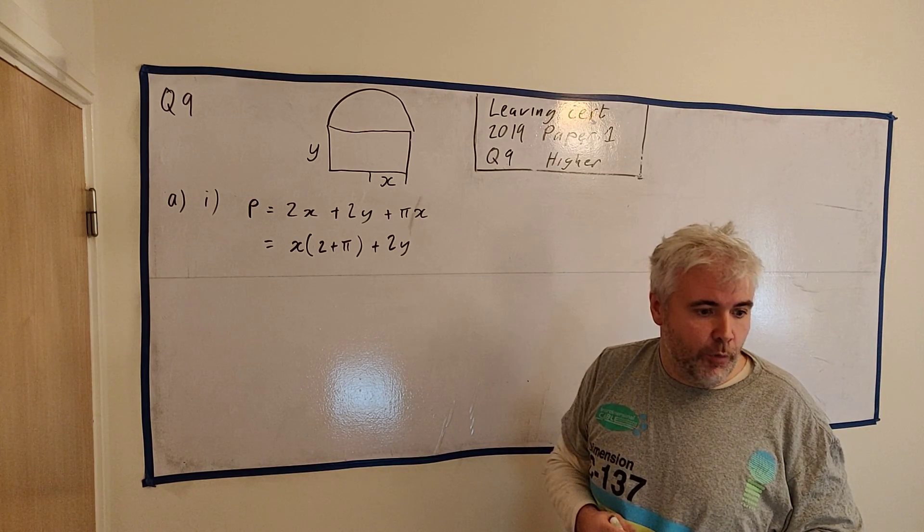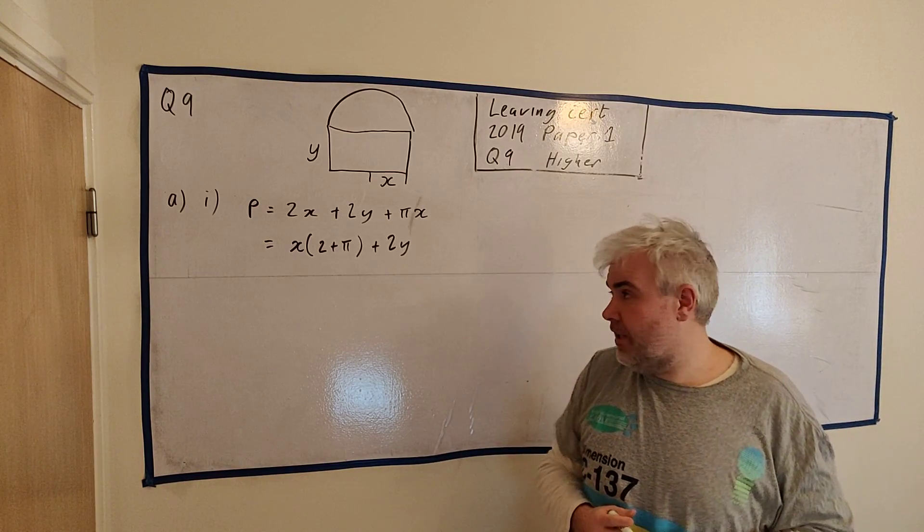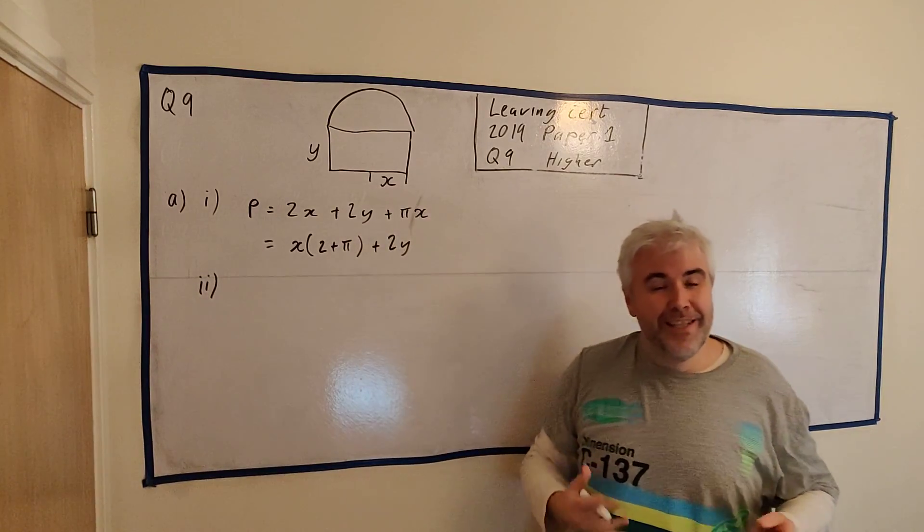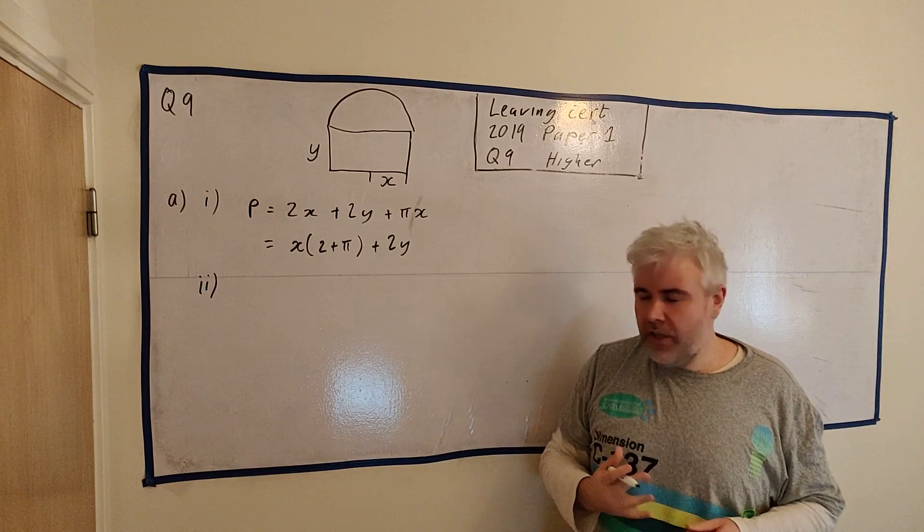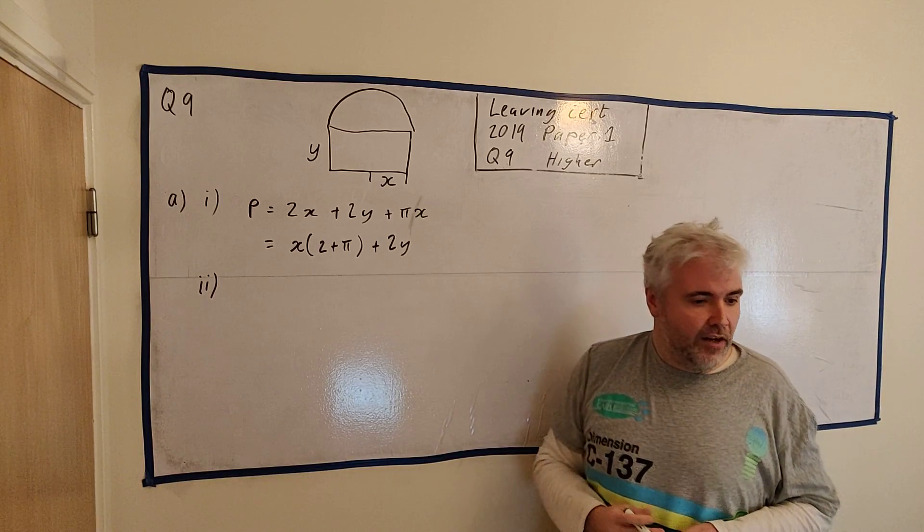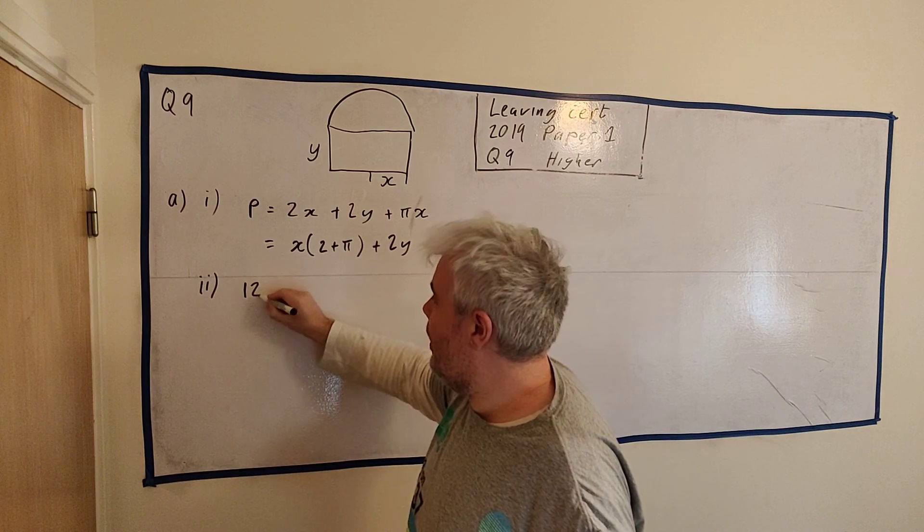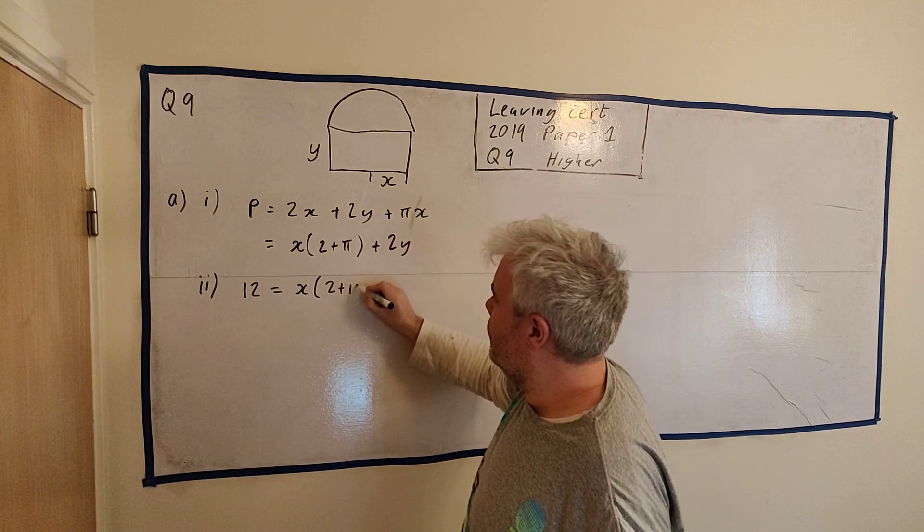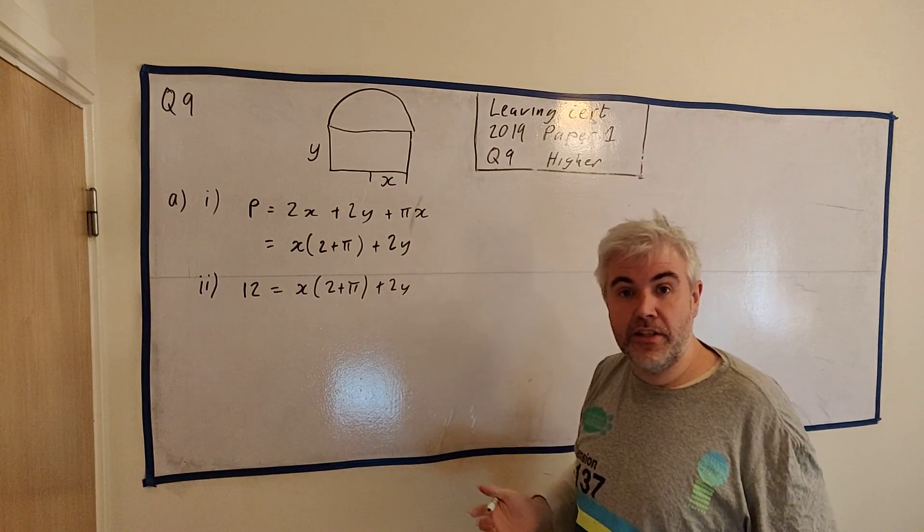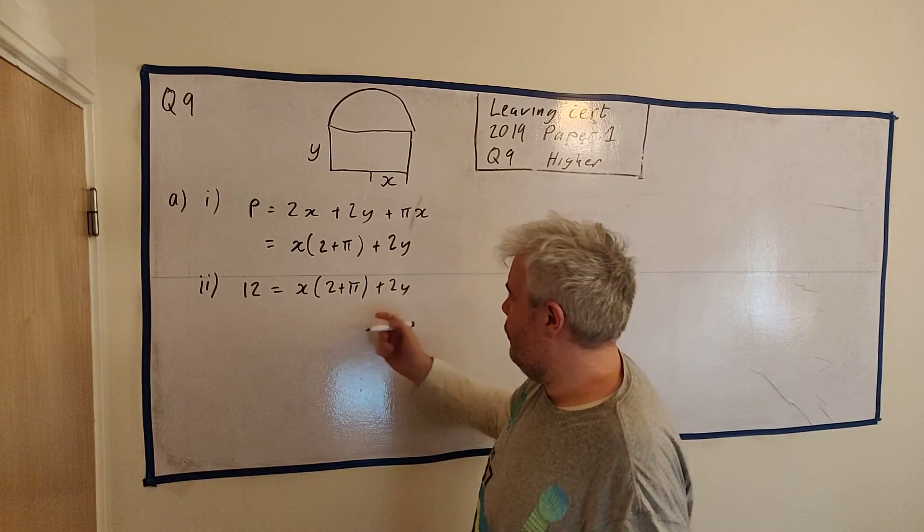Okay, so let's move on to part 2. In a particular window, the perimeter is 12 meters. Show that y is equal to the equation they give. So again, with these type of questions, when they ask you to show something, when they give you the answer, basically, try to ignore it. Certainly use it for some tips, for some help. But really, they are asking you to put y equals. They are telling you the perimeter is 12. They are telling you 12 is equal to x(2 + π) + 2y.